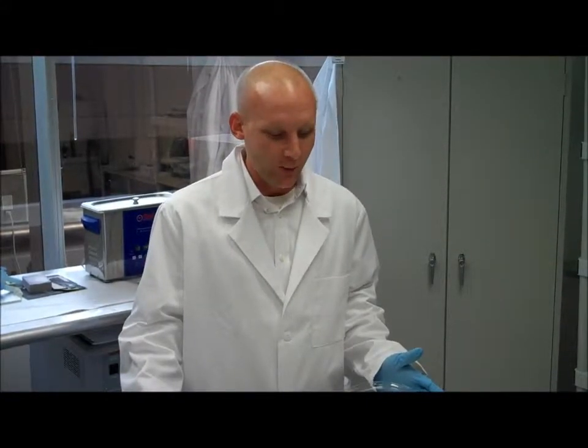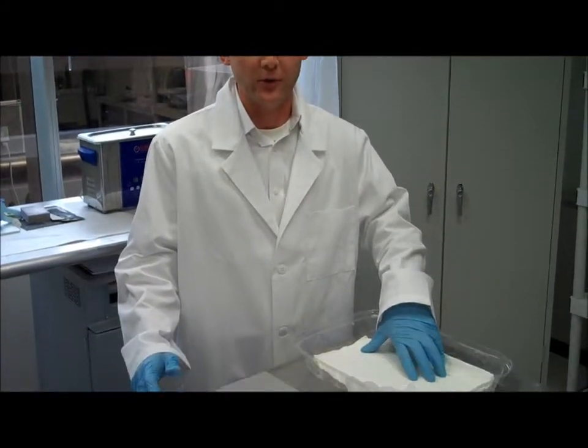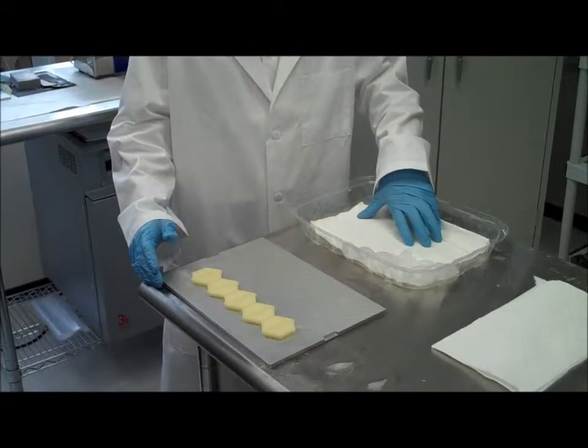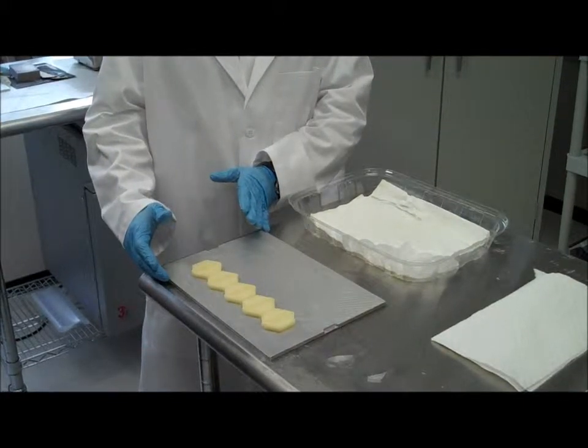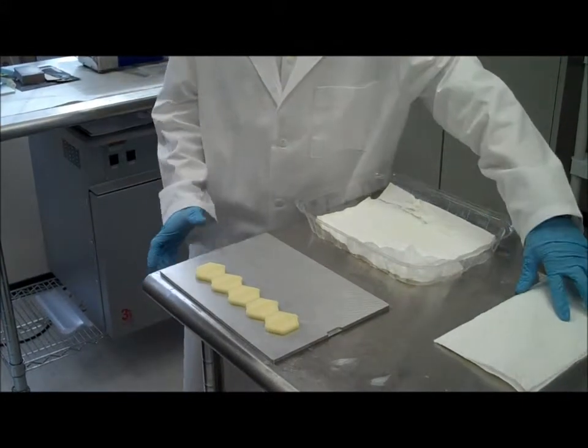To start processing some of the parts from our ProJet 3000 HD Plus printer, all we need is a nice plastic tray with maybe some paper towels in order to catch melted water, some ice cubes, our printing plate with our printed models on them, and some extra paper towels.